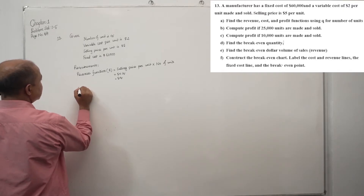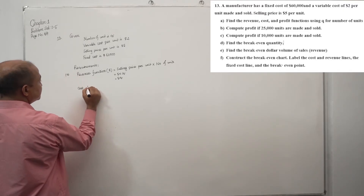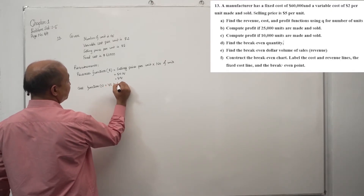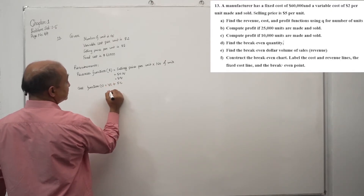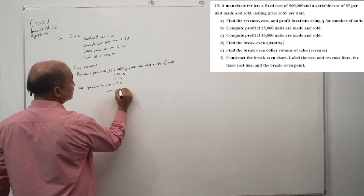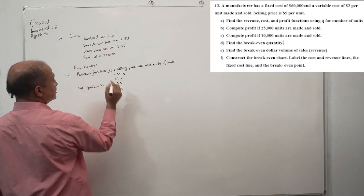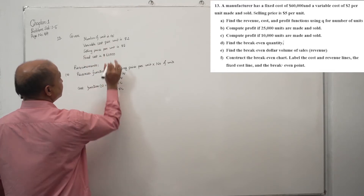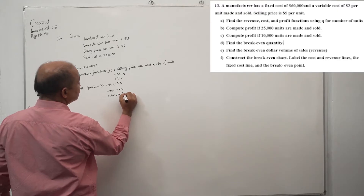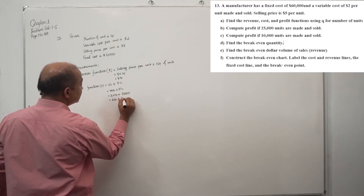So what is the cost function? The cost function equals variable cost plus fixed cost. This is mx plus fixed cost. Here m means variable cost per unit, which is 2, and x is number of units Q. So cost function C = 2Q + 60,000.